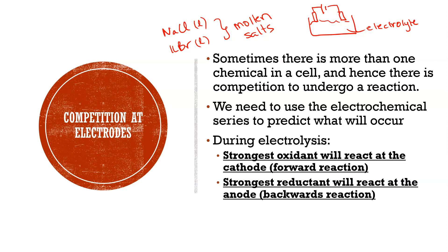We need to look at everything present in our cell, circle it on the electrochemical series, and then determine which is the strongest oxidant — because that will react at the cathode undergoing reduction — and which is our strongest reductant — because that will react at the anode undergoing oxidation. The reductant is always oxidized at the anode, and the oxidant is always reduced at the cathode.